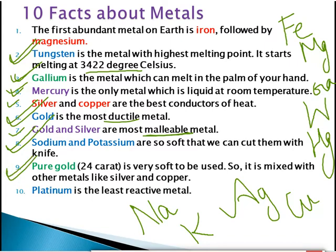The ninth fact: pure gold, which is 24 karat gold, is so soft that we cannot make jewelry from it. We have to mix other metals like silver and copper into it. The gold available in India is 22 karat gold, and jewelry is made from that.